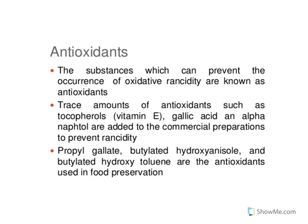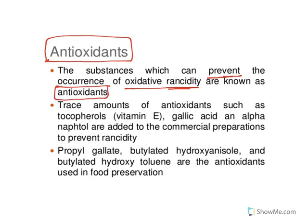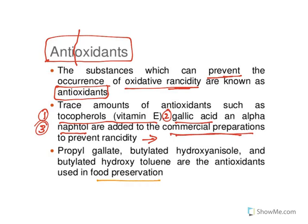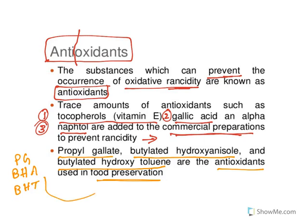Rancidity is a major problem for all commercial food products, so antioxidants are used to prevent it. Antioxidants are substances that prevent oxidative rancidity. For commercial preparations, tocopherols, vitamin E, gallic acid, and alpha-naphthol are added. For foods, propyl gallate, butylated hydroxyanisole (BHA), and butylated hydroxytoluene (BHT) are used as antioxidants and food preservatives. Their job is to prevent oxidative rancidity.